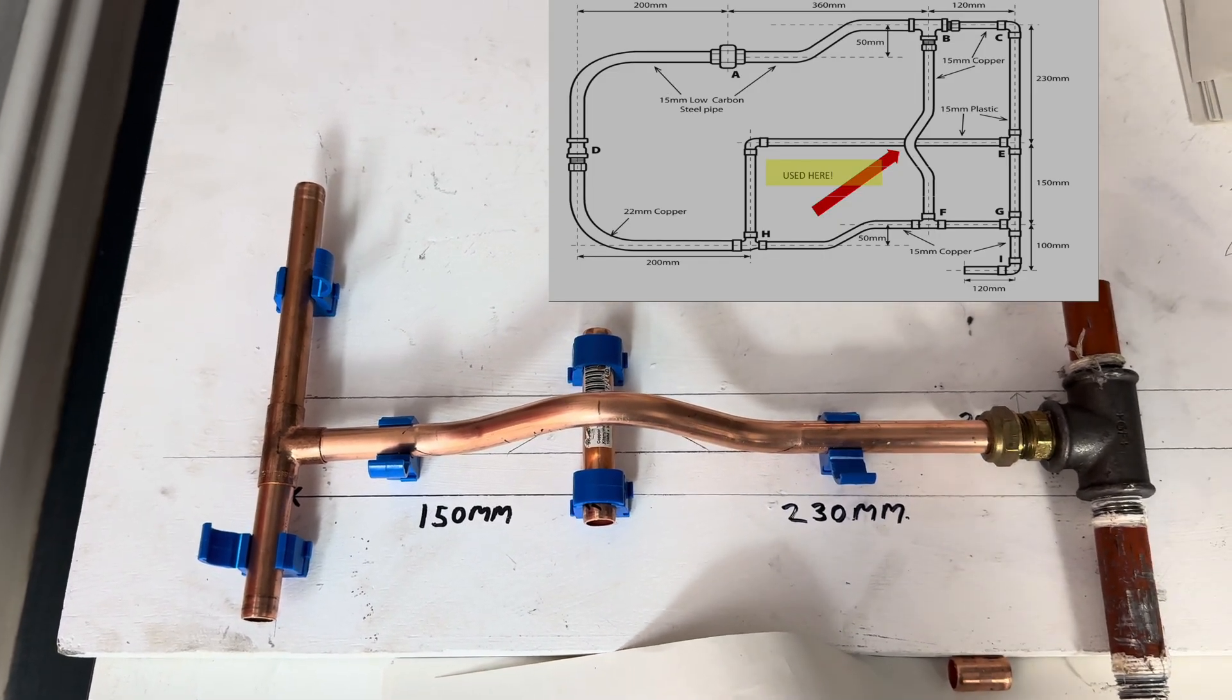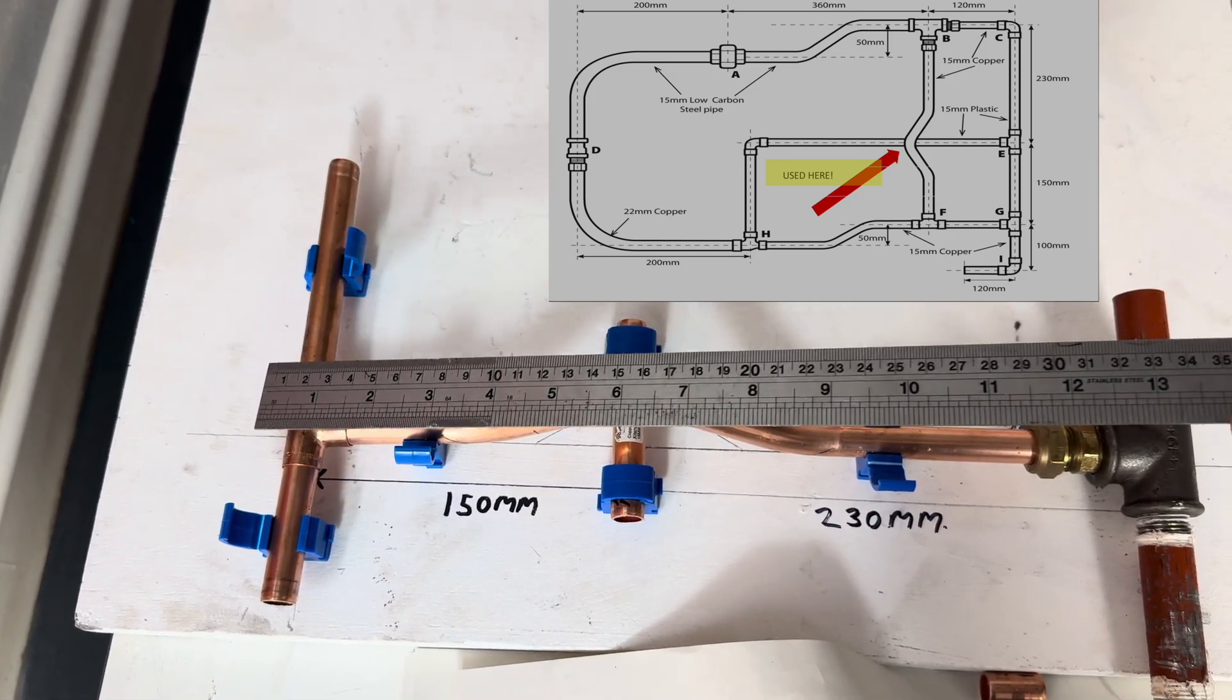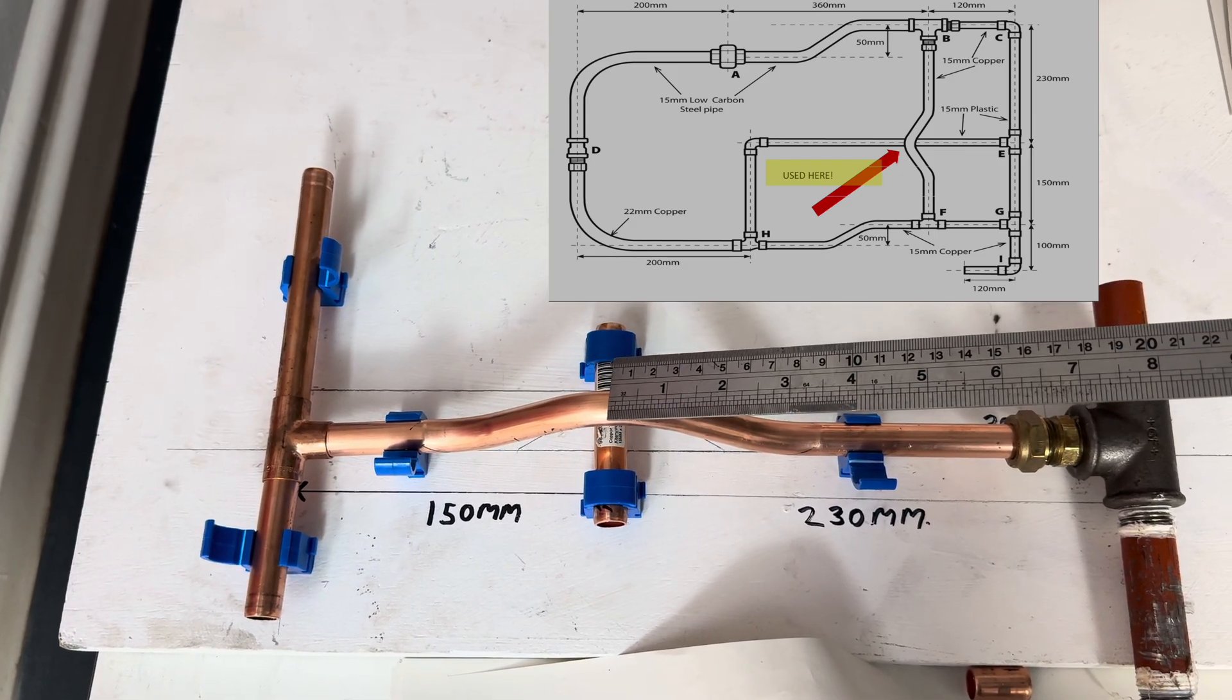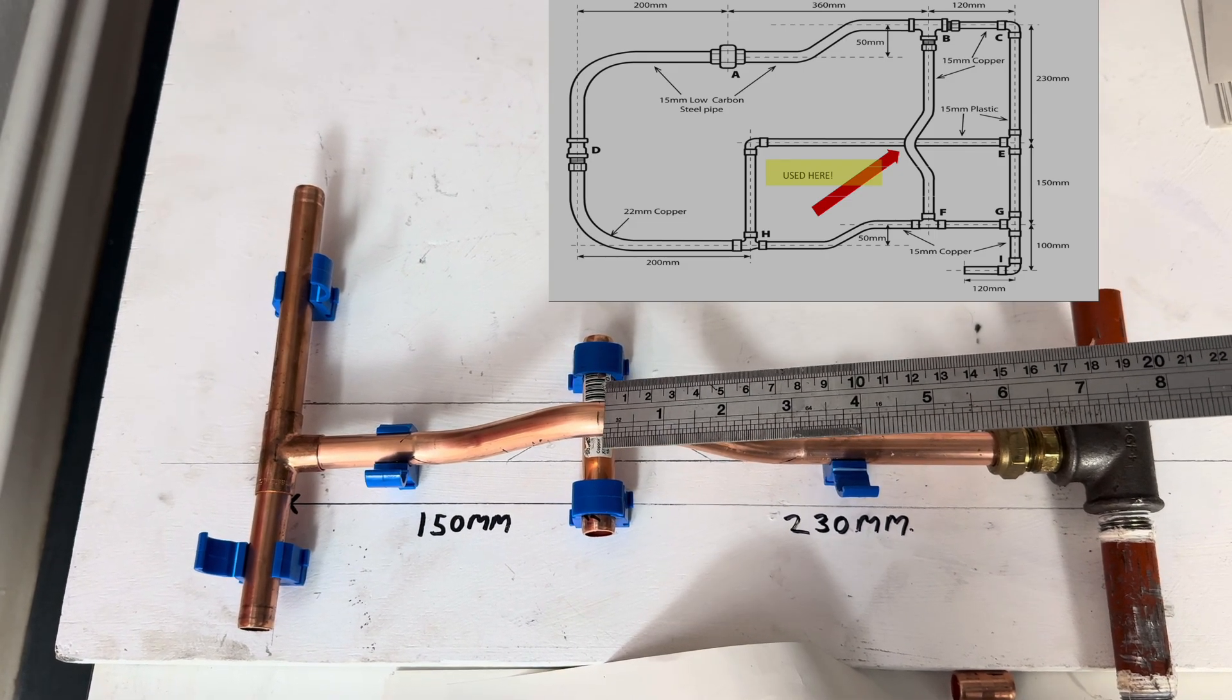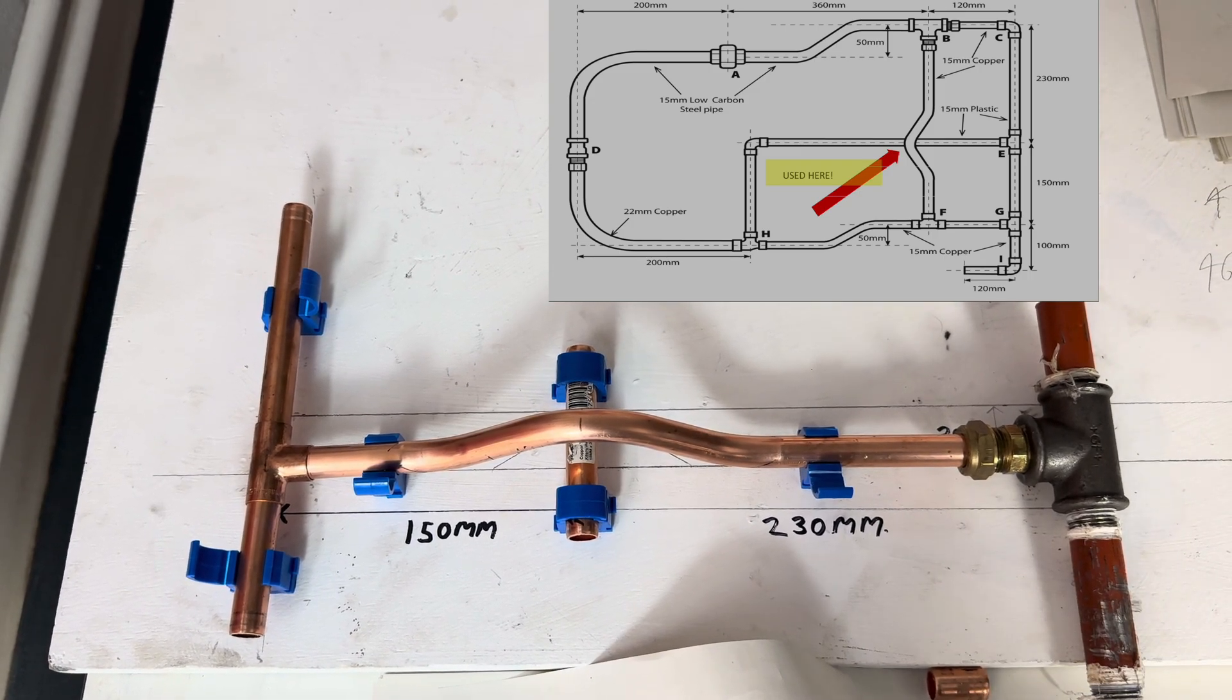This bend also appears in plumbing assessments. For example, 150mm from the centre of this pipe to the centre of the bend, centre of the bend to the centre of this pipe 230mm.